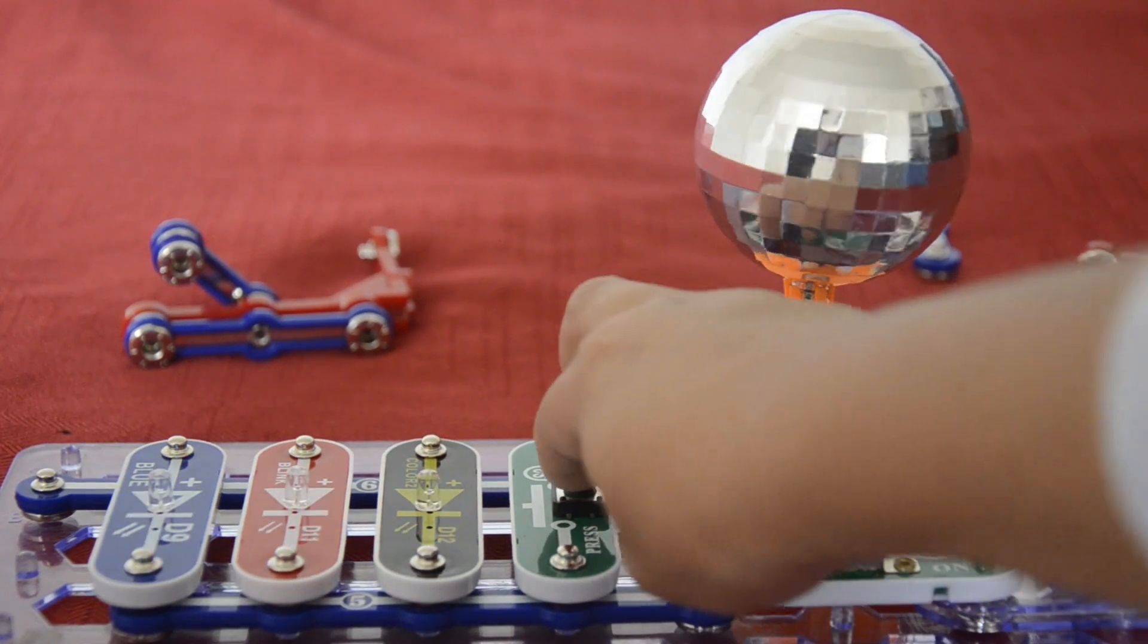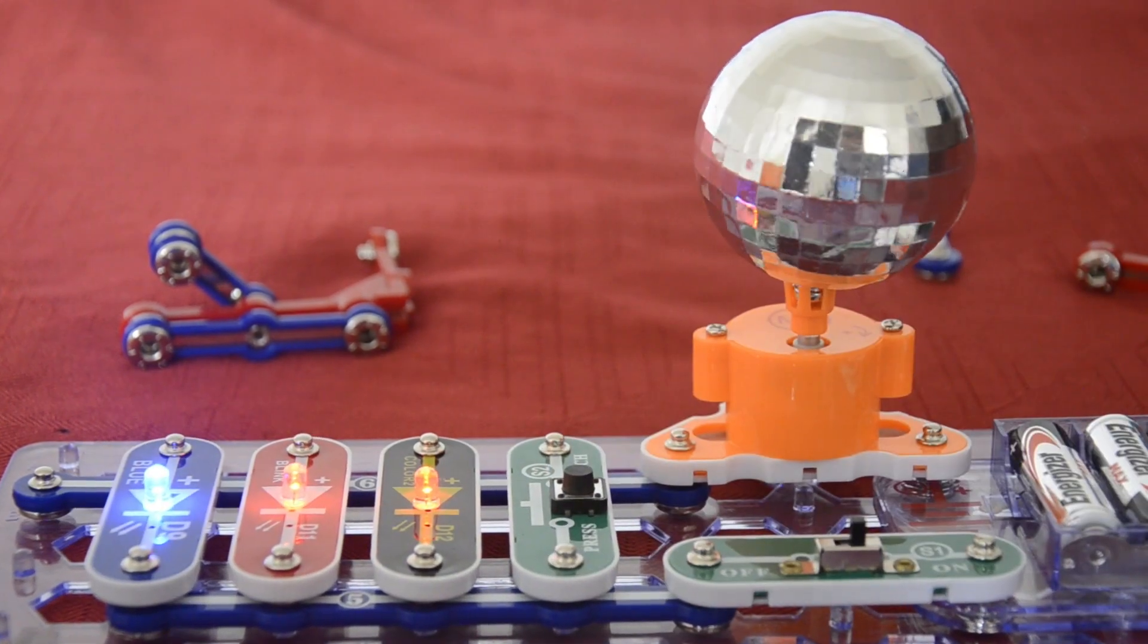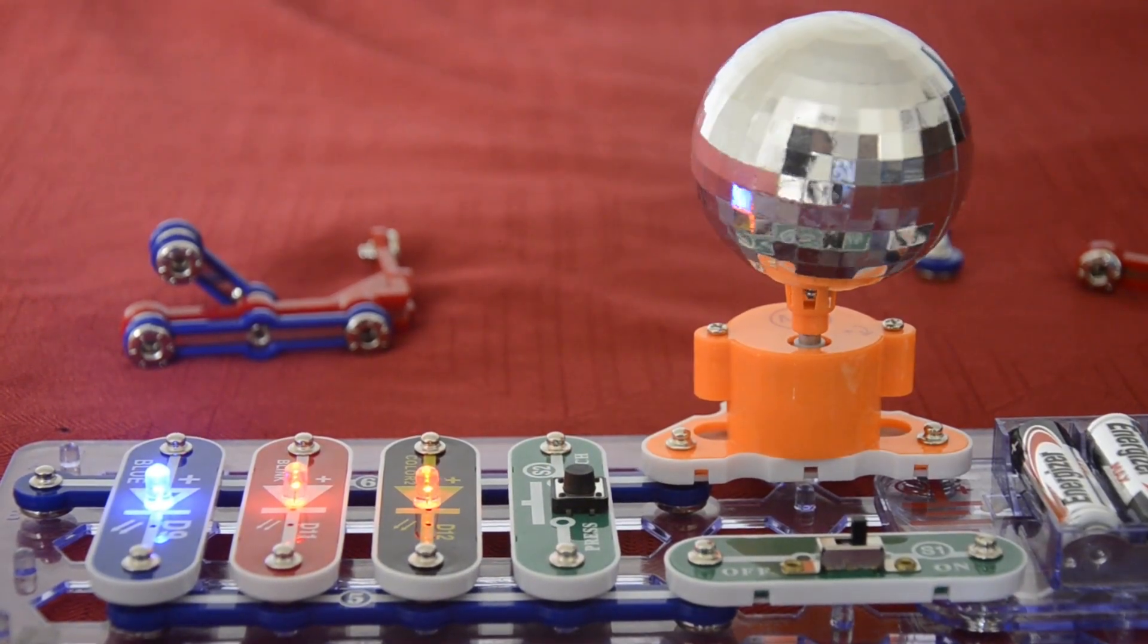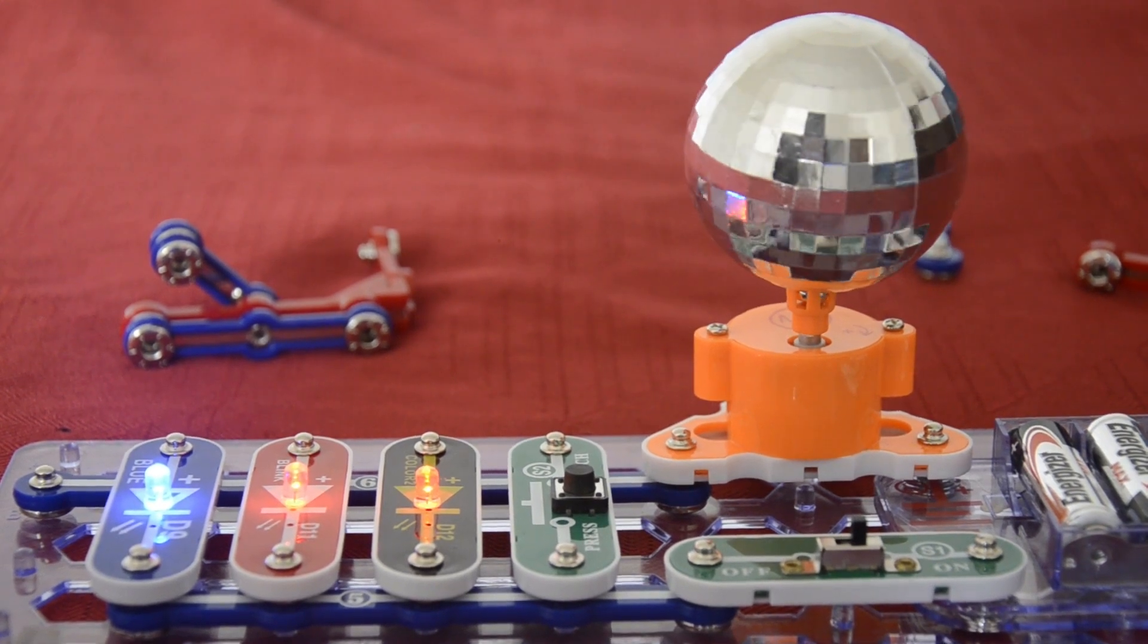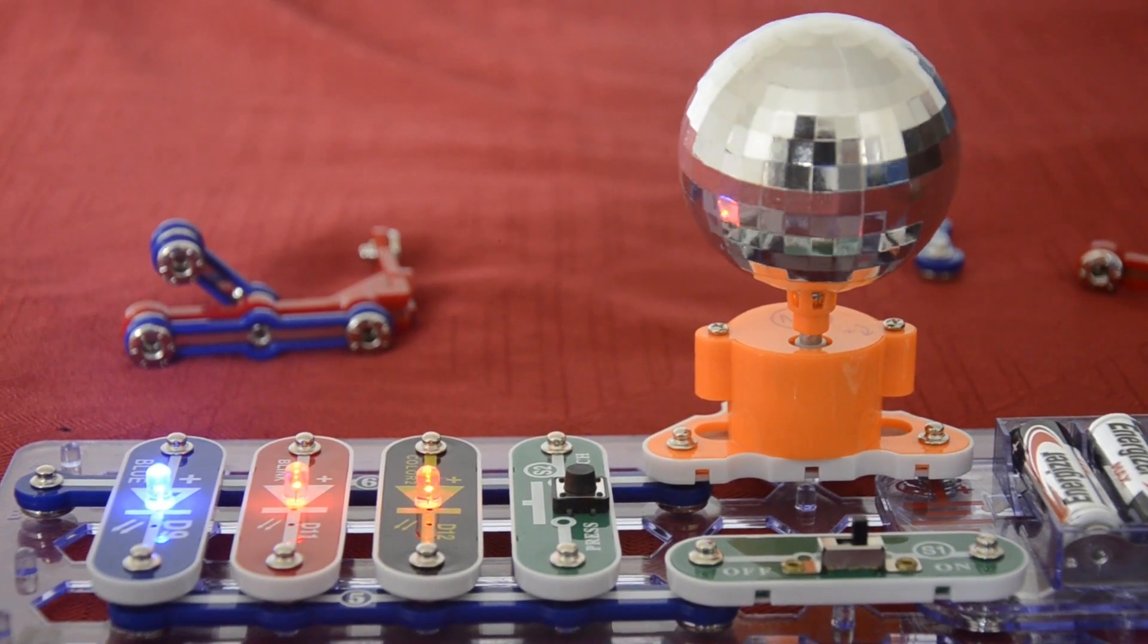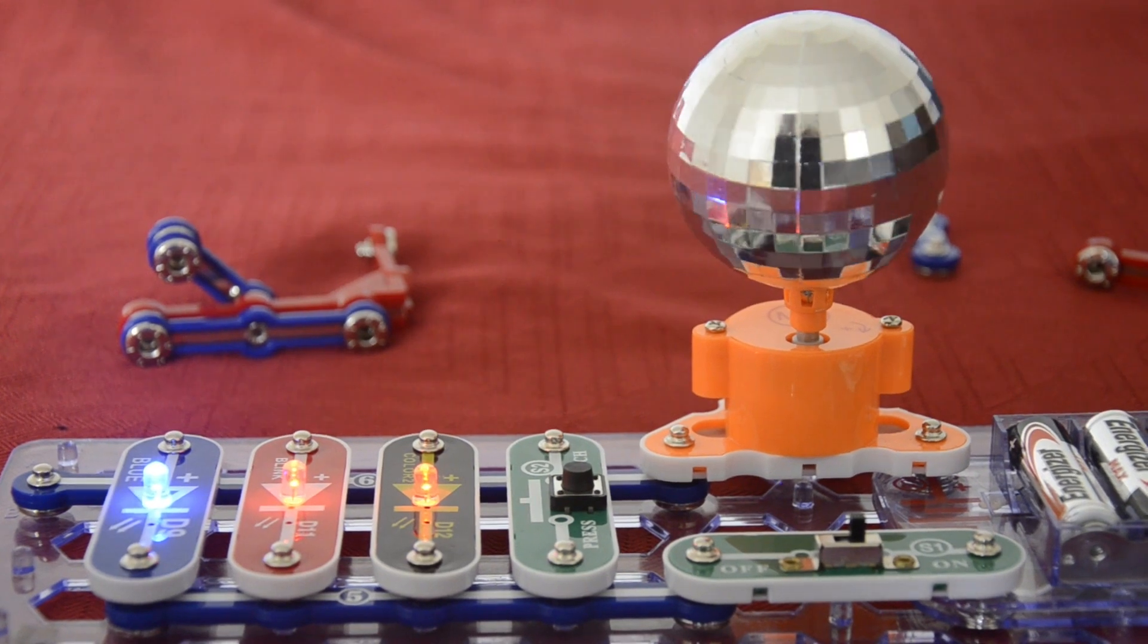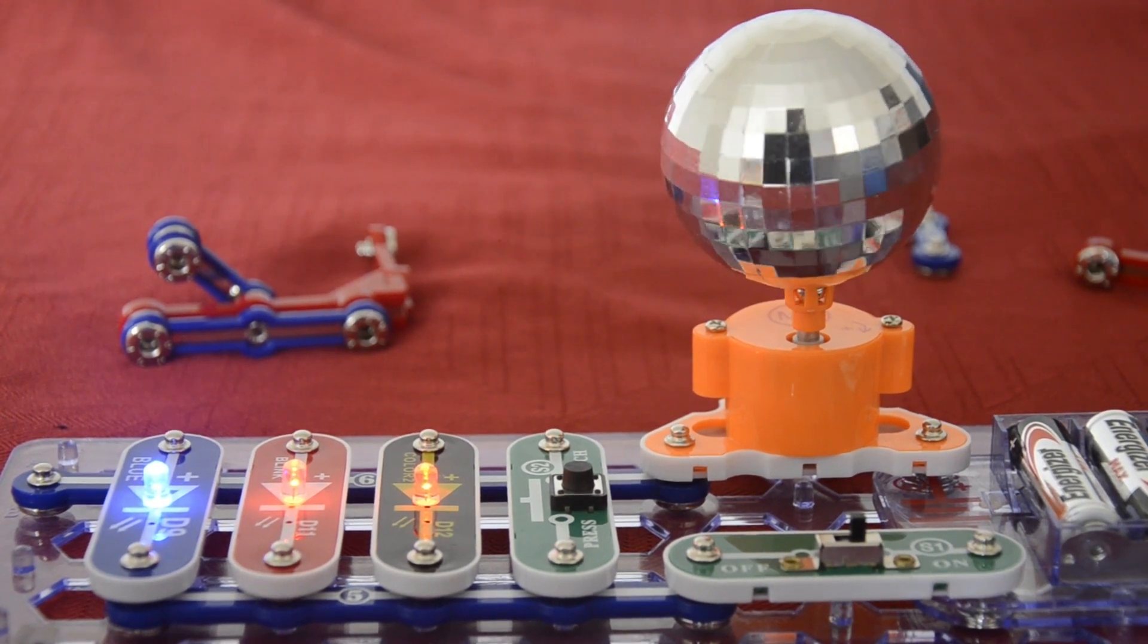So yeah, that's how to build project 109 mirror ball speed control, Snap Circuits 3D Meg. I'll see you next time, bye.